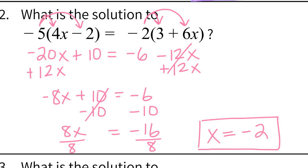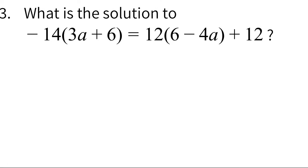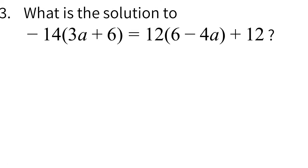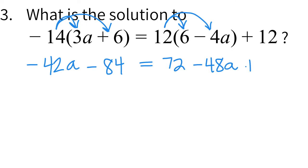And one more example of solving an equation. What is the solution to negative 14 times... well that whole equation. So we're going to start by doing distribution. Negative 14 times 3a is negative 42a. Negative 14 times 6 is negative 84. Equals now distribute on the other side. 12 times 6 is 72. 12 times negative 4a is negative 48a. And then bring down my 12.